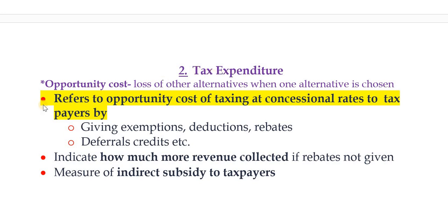The second topic is related to tax expenditure. Tax expenditure refers to the opportunity cost of taxing at concessional rates to taxpayers by giving them exemption, deductions, rebates, deferrals, credits, etc. The opportunity cost is the loss of other alternatives when one alternative is chosen. When you choose to give tax rebates, you show how much more revenue could have been collected if it had not been given. So it is the measure of indirect subsidy to the taxpayers.